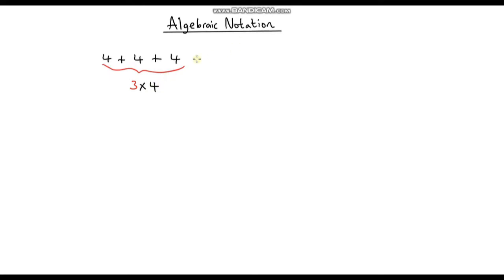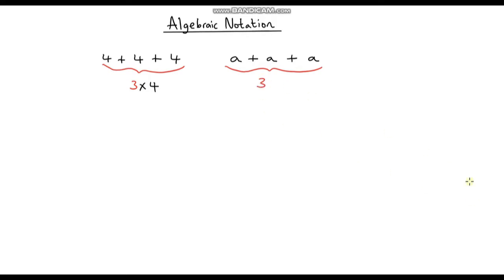Now let's think about if we replace the 4s with letters. Let's say we've got a plus a plus a. Well, we've got three a's being added together, so that is the same as 3 times a. All I've done is replaced the 4s with an a.